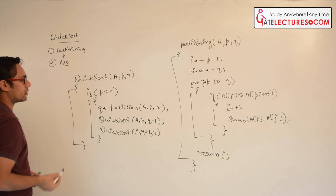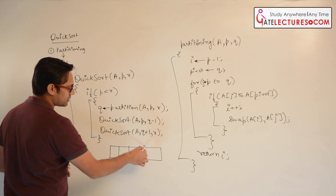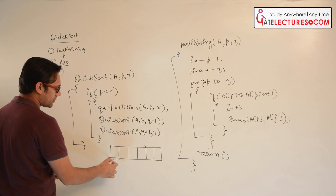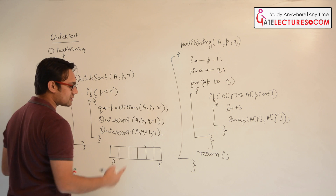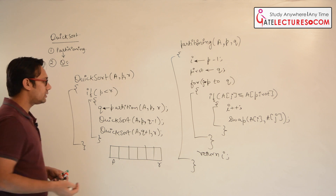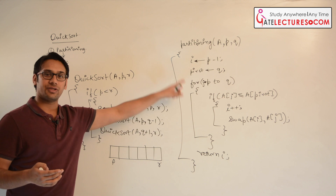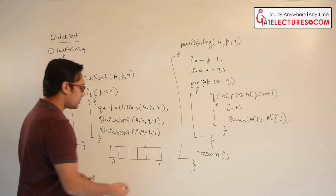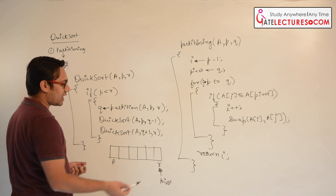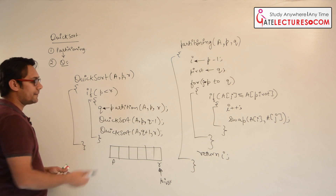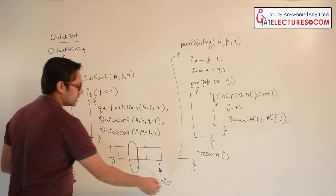This completes the quick sort procedure. Assume we have an array with some values and index locations, where p is the initial index and r is the ending index. If p is less than r — meaning at least more than one element exists — we call q equals partition(a, p, r). The partition assumes the last element is the pivot. Wherever the pivot is swapped, we call quick sort on the lower half and quick sort on the upper half.